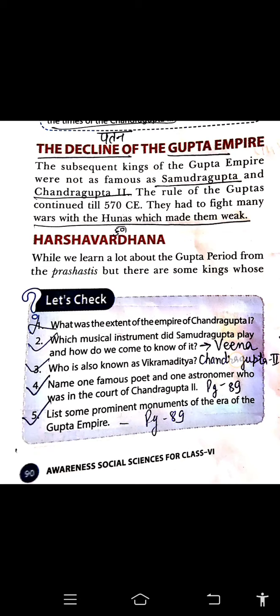Decline means patan — how the Gupta Empire ended. In this sequence, there were only two very famous kings: Samudragupta and then Chandragupta 2nd. After them, there were many wars. The Huns began attacking repeatedly, and because of this, the Gupta Empire gradually declined. Now we are just talking about Harshvardhan. While we learn about the Gupta period from the Prashastis, there are also kings whose biographies give a lot of information.